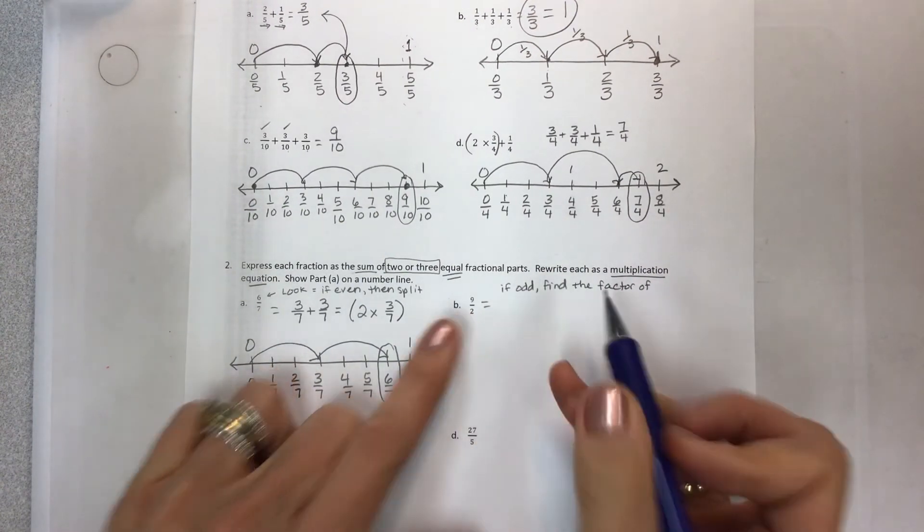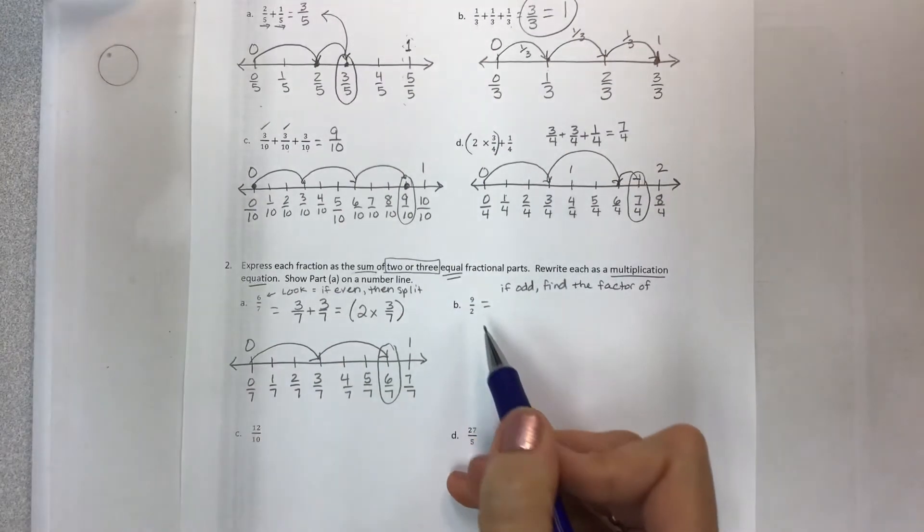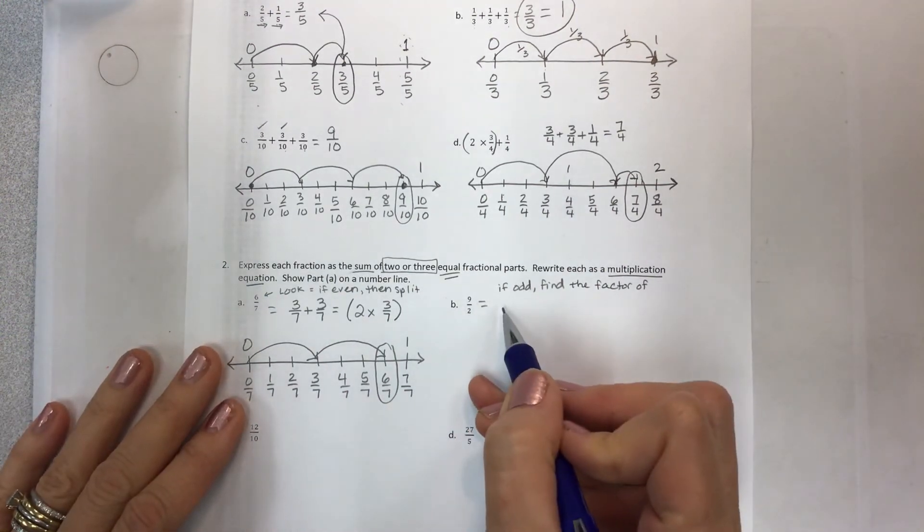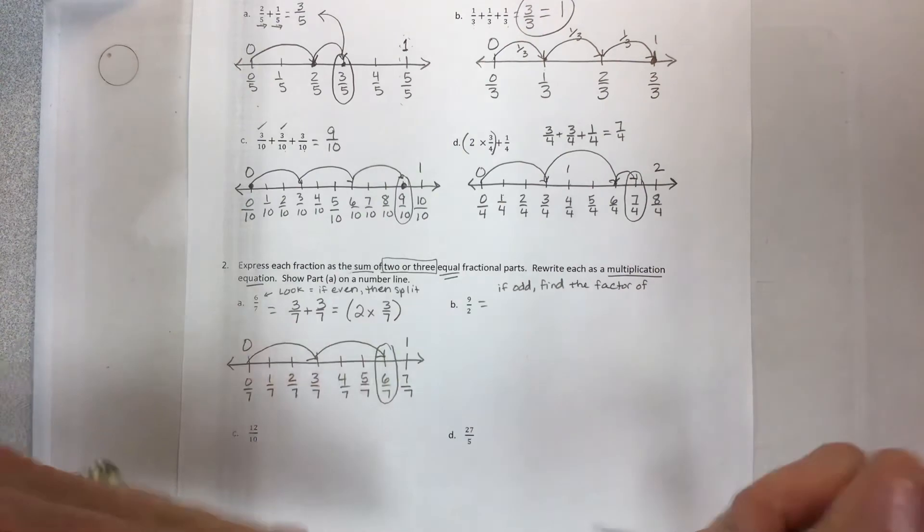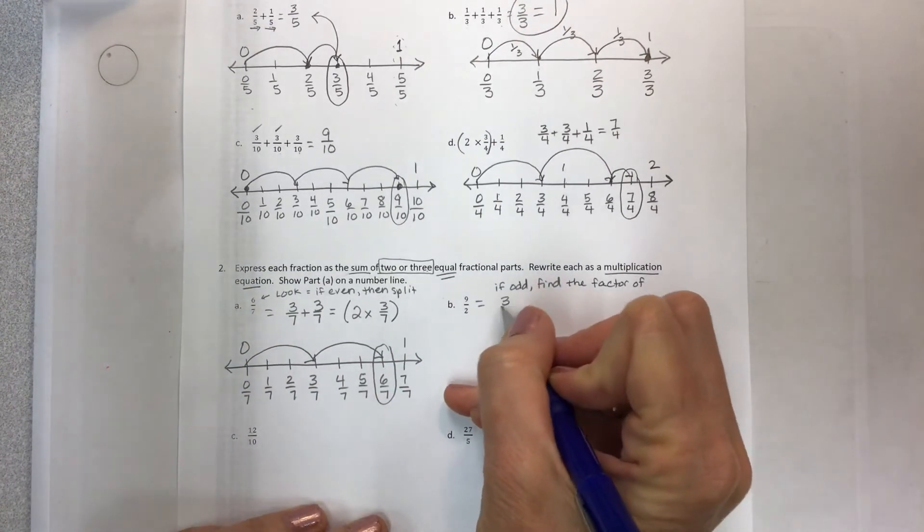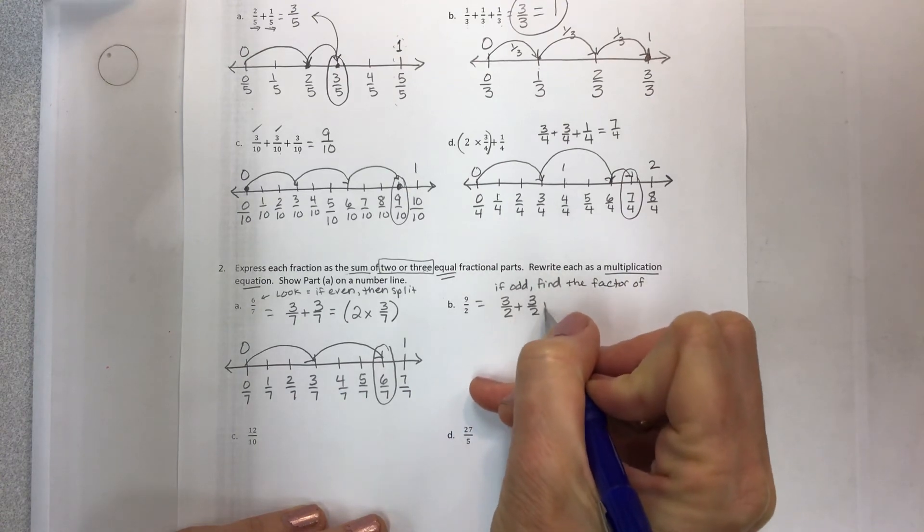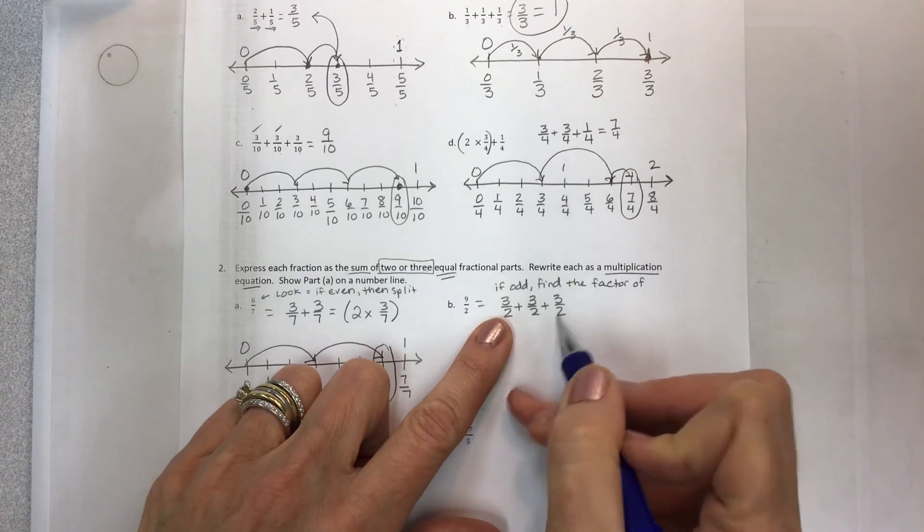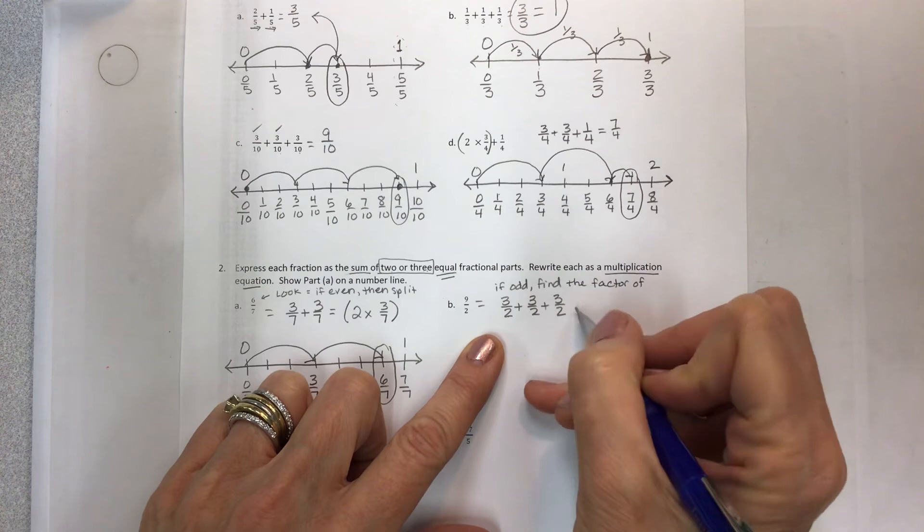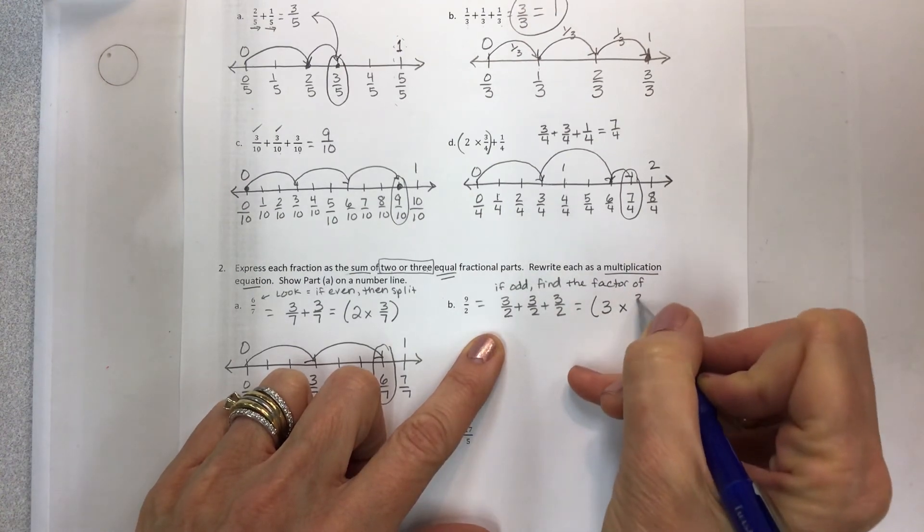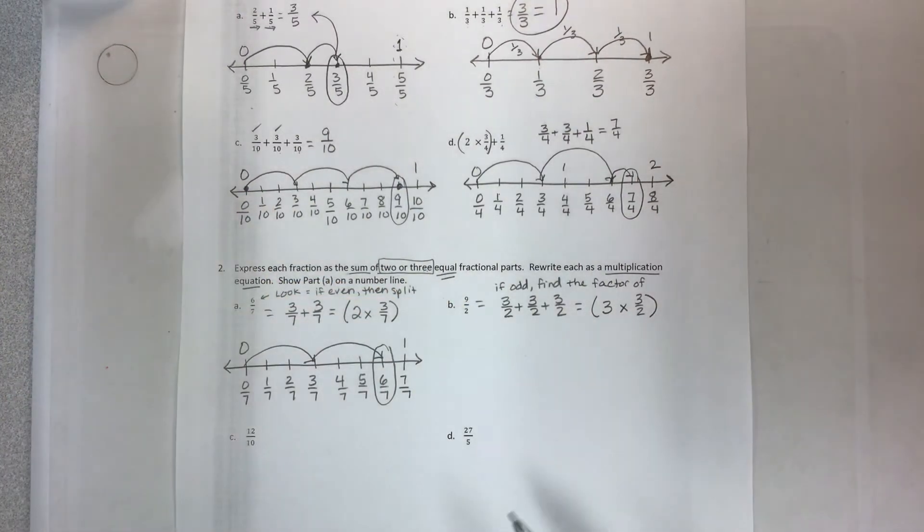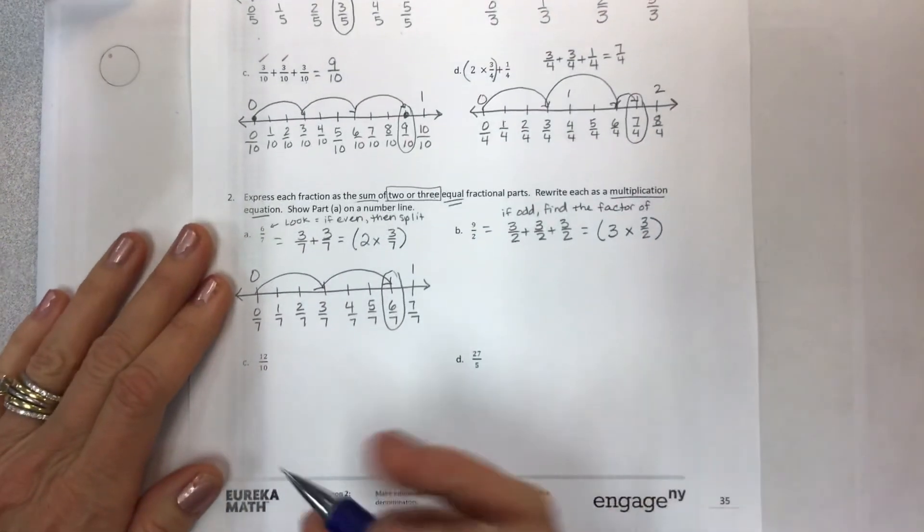So this is odd. So what are factors of nine? Well, there's nine times one to get nine, but you can also multiply three times three. So here's where you're going to see what the factors are and try to make equal fractional parts. Three halves plus three halves plus three halves. That's right. I can do this and break it into three parts. And now I see that there's one, two, three. So I will do three times three halves to show that this is just repeated three times. I don't have to write it on a number line. So I'm going to move on.